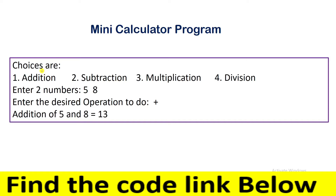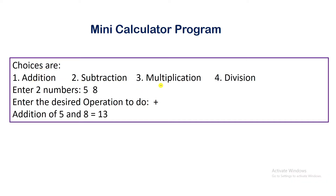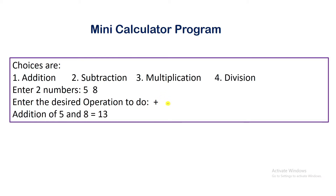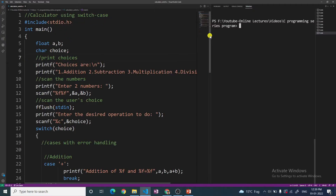So what is this program doing? This program shows us the choices like addition, subtraction, multiplication, and division. It asks the user to enter two numbers on which we have to perform these operations. After entering the two numbers — let's say five and eight — the desired operation is also asked from the user. You can enter plus, minus, asterisk for multiplication, or slash for division, or you can enter one, two, three, four as choice numbers.